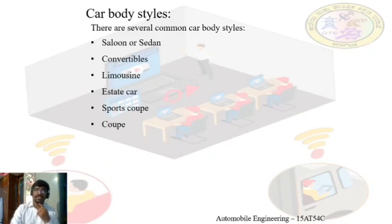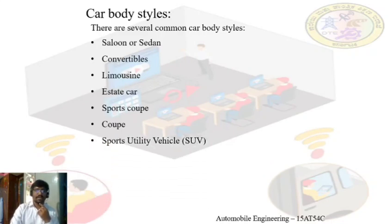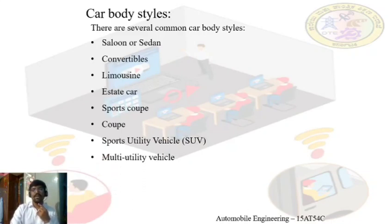Coupe comes in four-door or two-door variants, four-seater or two-seater. SUV is a four-seater vehicle where luxury as well as a sporty engine will be coming in this particular car body. Multi-utility vehicle — as the name itself indicates, it can be used for multi-purpose. So let's go through one by one.